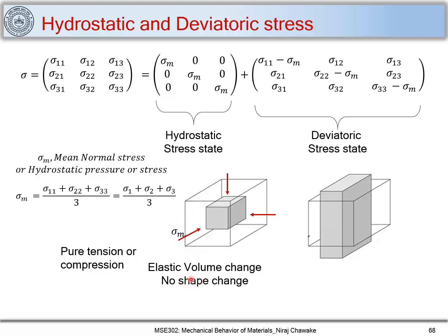There is an elastic volume change and no shape change. When I say elastic volume change, that means when I remove sigma m, the cube will spring back to its original shape. The hydrostatic stress state causes a volume change but no shape change, and thus it does not affect yield strength. Sigma m will not affect sigma_y, which is yield stress or yielding. However, it will affect epsilon_f, which is fracture strain. We will deal with this when we study fracture in detail. So hydrostatic stress state will not cause any yielding or plastic deformation, but it can affect fracture strain.